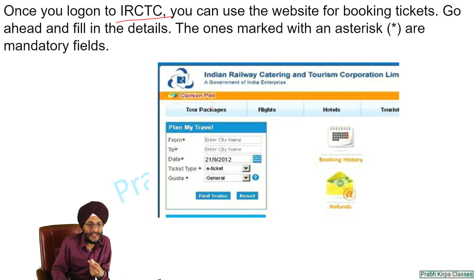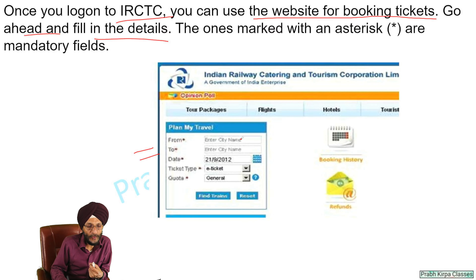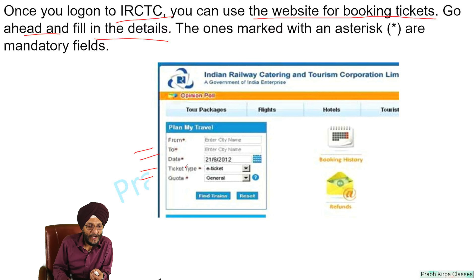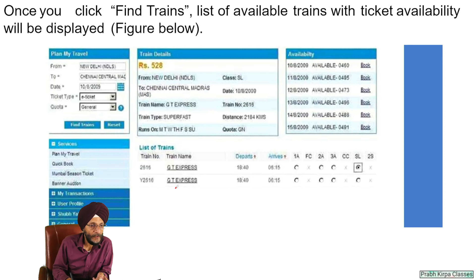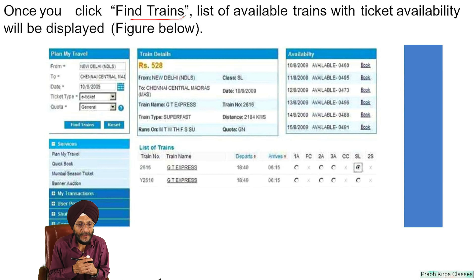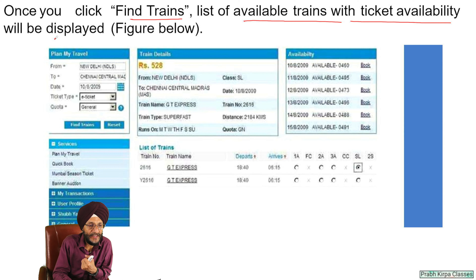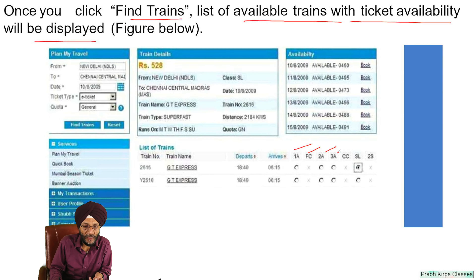Once you log on to the IRCTC site, you can use the website for booking tickets. Go ahead and fill in the details: when you want to visit, where you want to visit, what type of ticket you want, and in which quota you want. All fields marked with an asterisk are mandatory. Once you find the train through which you want to travel, a list of trains is available. After selecting the relevant train, you can book a particular class — first class or second class.